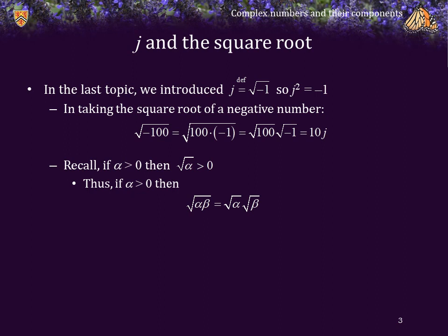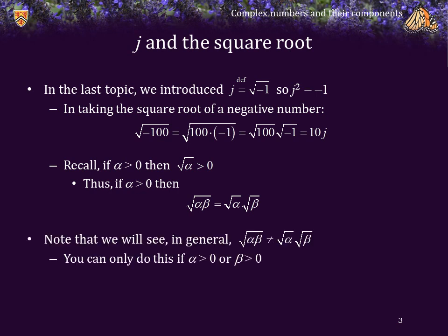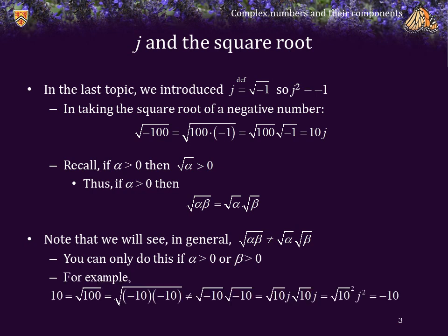Recall that if alpha is greater than 0, then the square root of alpha is greater than 0, and thus we can always take the square root of alpha out from the product under the square root. Note that in general we cannot separate out a square root unless either alpha is greater than 0 or beta is greater than 0, or both. For example, 10 is the square root of 100, but 100 is also negative 10 times negative 10. Writing that as the square root of negative 10 times the square root of negative 10 would give negative 10, not 10. So for square roots, we can only take something out from underneath if it is positive.